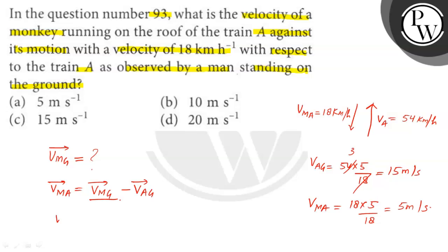So, we will write it as minus 5 meter per second. Here the VMG will be 10 meter per second, option B.